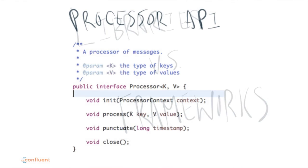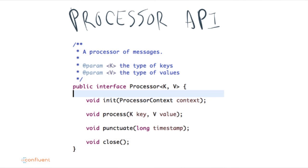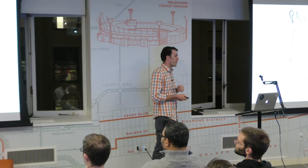There are two interfaces: a callback API and a DSL. We got out of the whole business of being a deployment framework because people have Mesos, Yarn, Chef, Puppet, and many other tools. Stream processing jobs aren't that complicated — they run forever anyway. Different people want different deployment frameworks, so there's no need for the stream processing library to handle any of that.